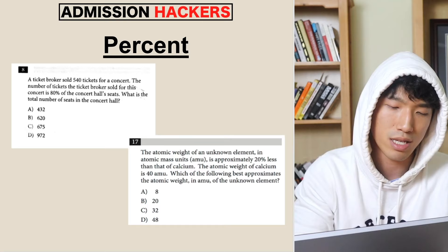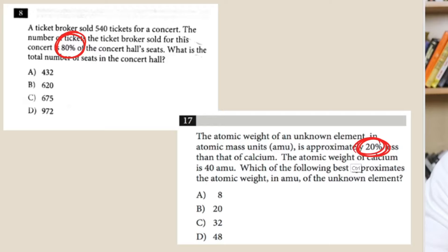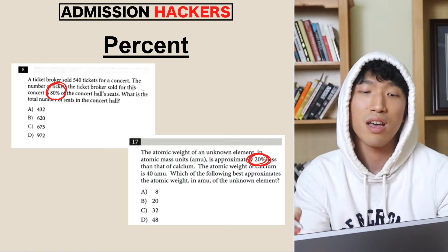So how can we tell we're dealing with a percent problem? It's actually really simple — you look at the question and see if there is any kind of percent. If you see any kind of percent, there is a very high chance we're dealing with a percent question, and when we're given a percent question, there are two different types.